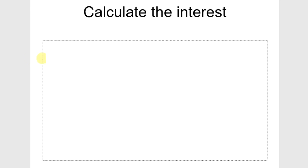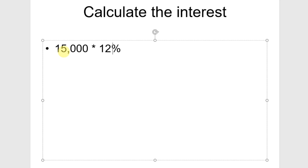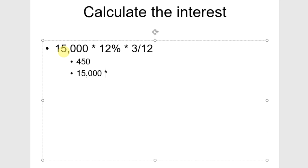Now let's calculate interest. We're going to take $15,000 multiplied by our 12% interest rate, then multiply by three months out of 12 to get the interest for the full note — that's $450. So we're going to receive $15,450 when the note matures. For just the two months, we go $15,000 times 12% times two months out of 12, and that is $300.